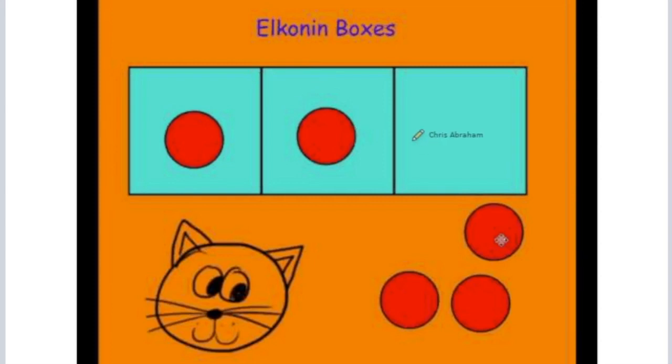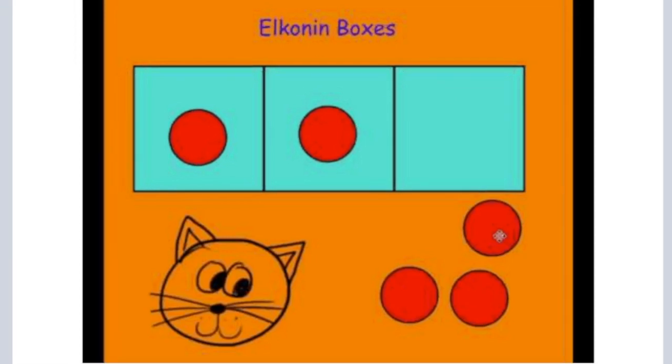In this activity using Elkonin boxes, the teacher provides a visual cue or picture of an object that they want a student to sound out the individual phonemes in. Now in this one right here, you're going to notice it's a picture, it's not a word.